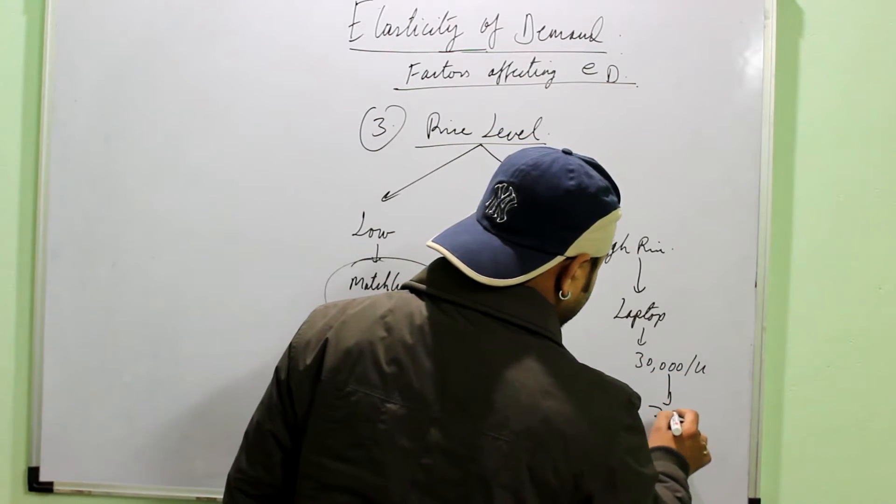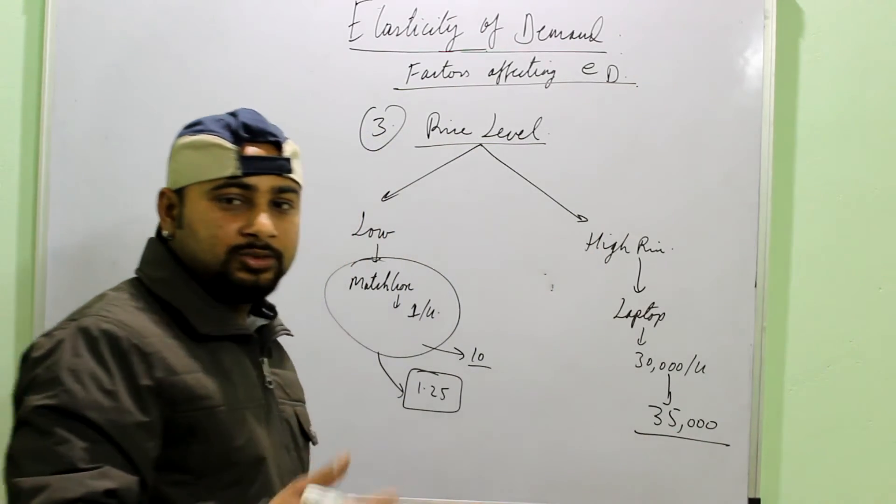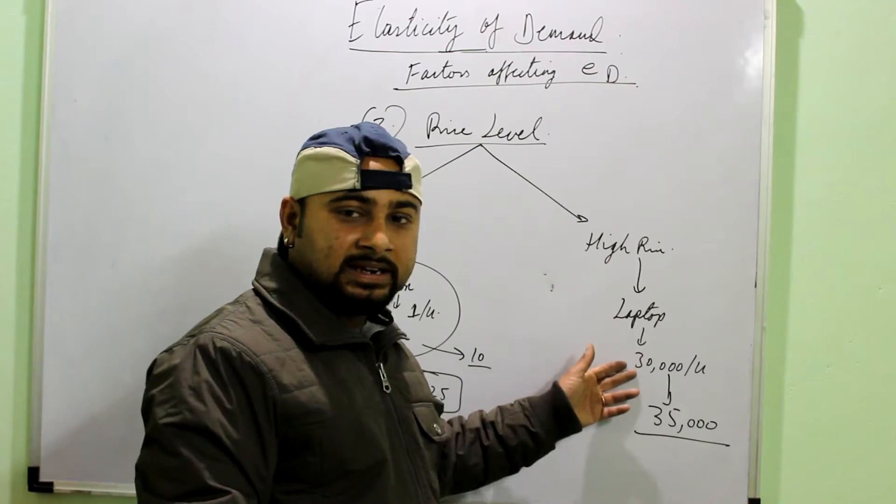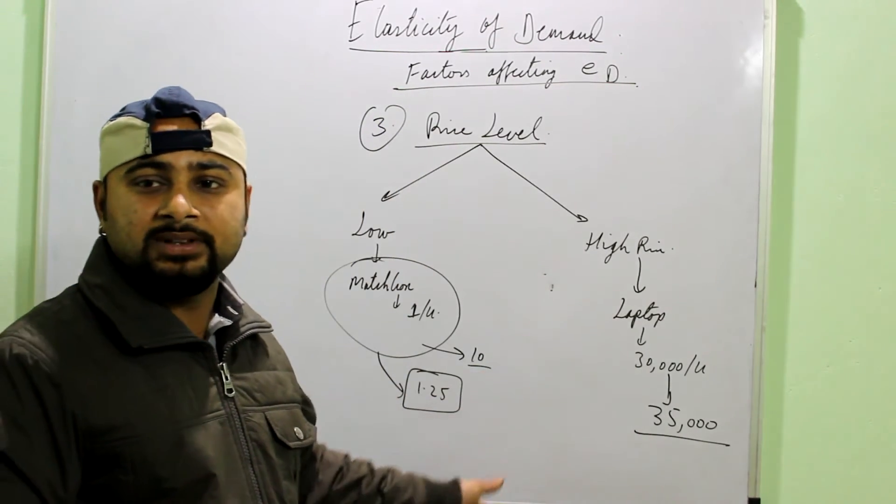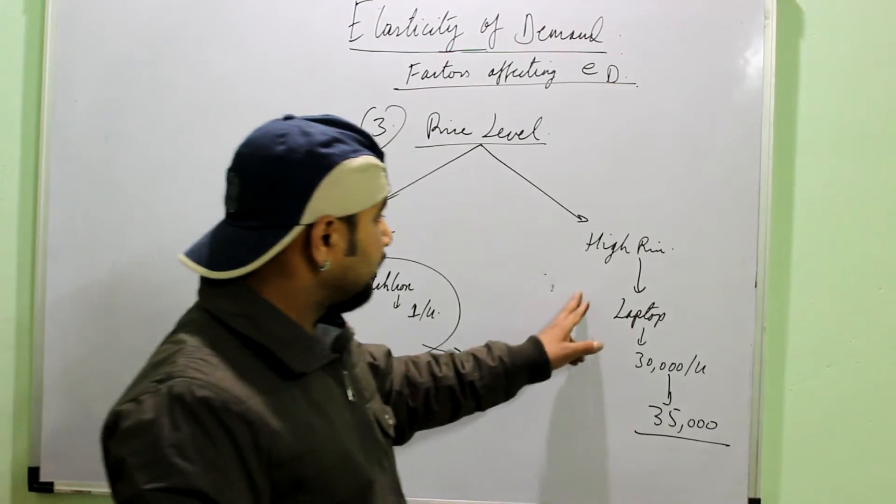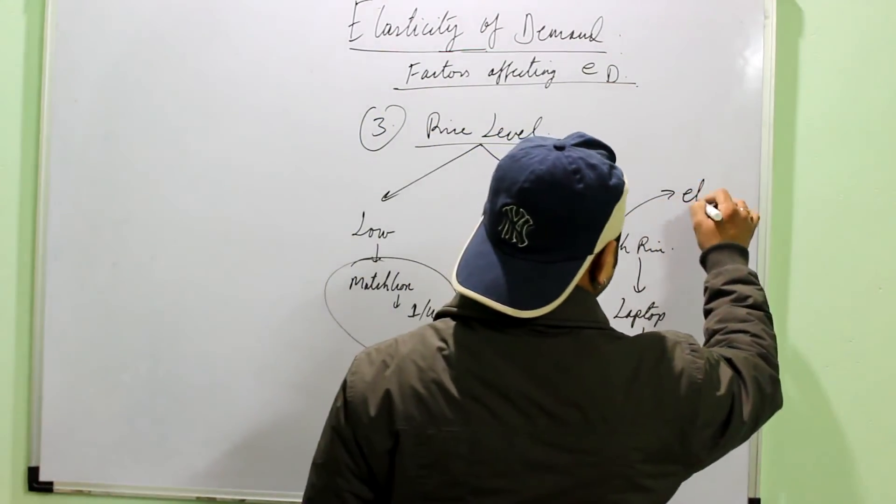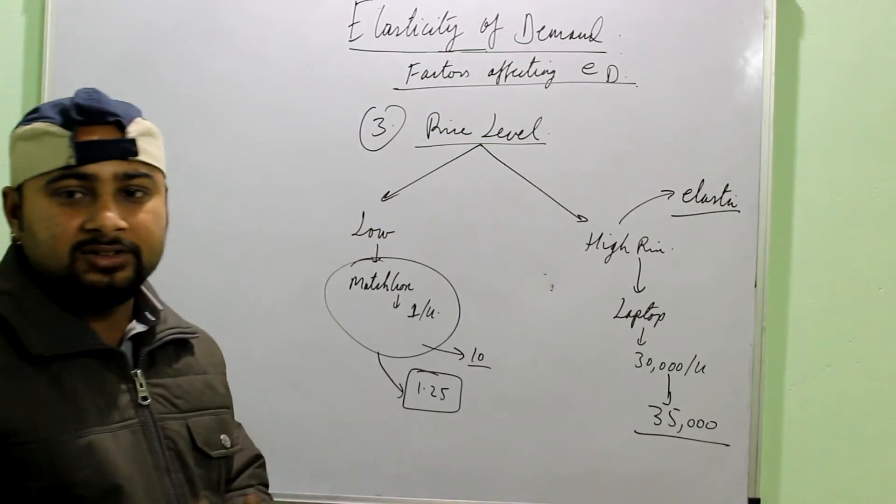But here, if the price rises to 35,000, then the consumer's budget is affected. So, here, if you are carrying only 30,000 with you at that point of time, you may not be able to buy that particular variant. You may have to buy some other variant. So, here, for the high price commodities, the demand is elastic.